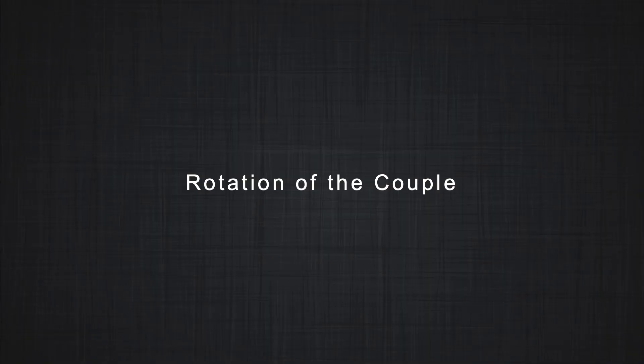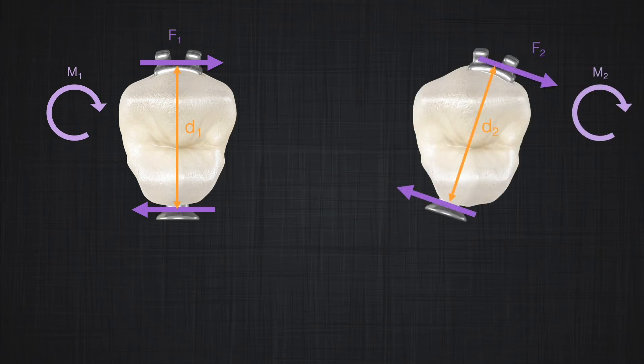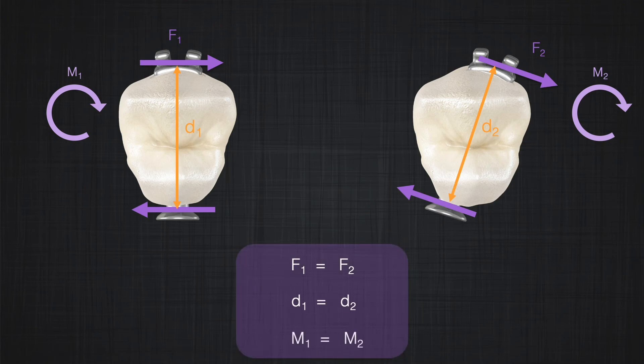Another principle of the couple is the rotation of the couple in space. Not all the time can we apply the couple on the surfaces we like, but that won't affect the result, as long as you keep the distance between the forces the same and the forces are the same. You can rotate the couple in space — within the same dimension — and have the same effect. If you change dimension, you are producing a moment in another dimension of space. Applying F1 and F2 with distance D1 produces a counterclockwise rotation M1; rotating it in space produces M2, and M1 and M2 are equal because forces and distance are equal.